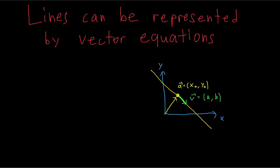Let's say vector V, which has components A and B, is parallel to this line. We have a point on the line and a vector parallel to the line — that's all we need to make a vector equation. Any point on this line can be represented as the addition of vector A and some multiple of V. If we multiply V by some scalar, it can span the entire line. Drawing the position vector from the origin to the end of V, which is the addition of A and V, we can get the position vector for any point along this line.